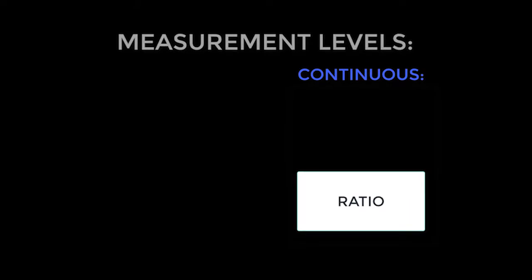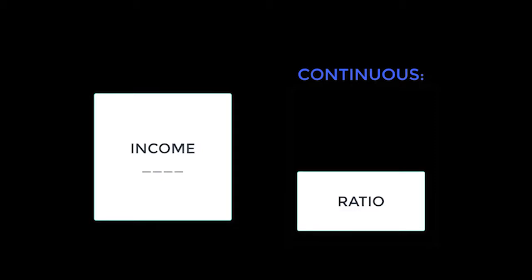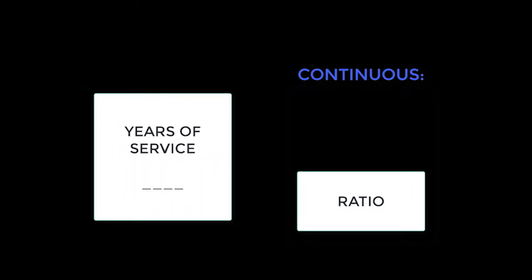Our last level of measurement is ratio. Ratio level data are classified as being in logical order with the presence of equal intervals, and also an absolute zero. For example, income is considered ratio because it involves numbers with equal distances as well as the presence of an absolute zero — zero income is an available choice. Similarly, years of service is considered ratio because it involves numbers with equal distances and an absolute zero — zero years of service is a possible choice.